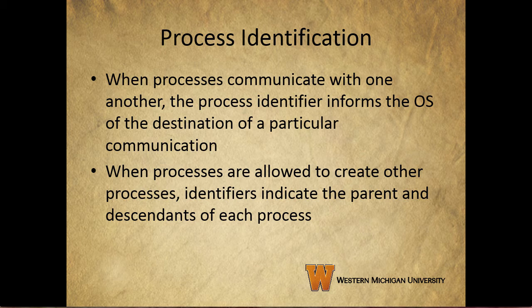When processes communicate with each other, the process identifier informs the operating system of the destination of a particular communication. When processes are allowed to create other processes — child processes — identifiers indicate the parent and descendants of each process. In addition to these process identifiers, a process may be assigned a user identifier that indicates the user responsible for the job.